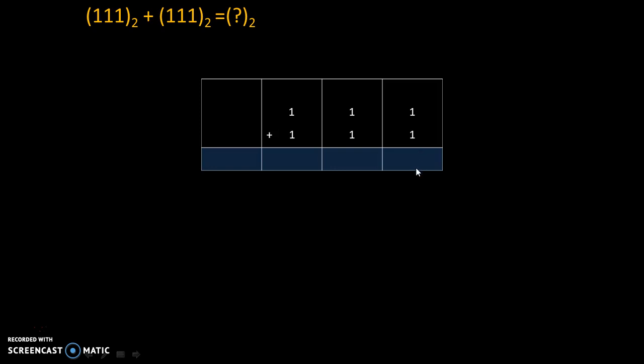So 1 plus 1 is 0 with carry 1. Now, 1 plus 1 is 0 with carry 1, but we need to add one more 1. That's why this is 10 plus 1, which is the third 1.